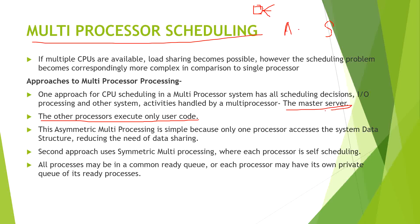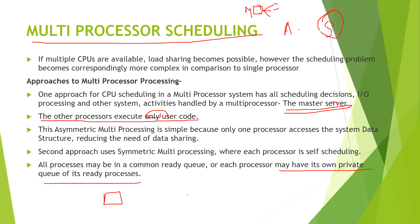In asymmetric scheduling, one processor gives orders and the others fulfill those requests — these are the slave servers and that is the master server. In symmetric multi-processing (SMP), all processors are independent. They each have their own private queue of ready processes. For example, with two processors, both work independently and have their own queues containing processes to execute — perhaps three processes for one processor and two for another.